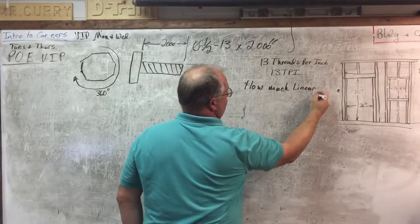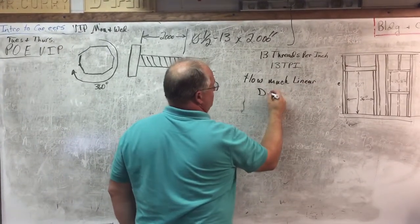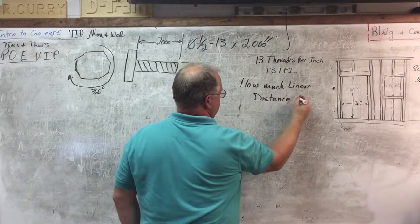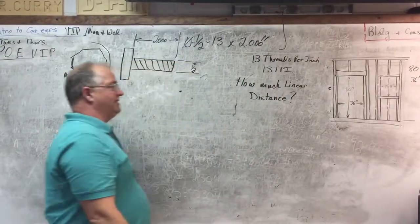So again we're translating this rotational motion into our linear distance that we go. And to determine that, we have to divide our pitch.